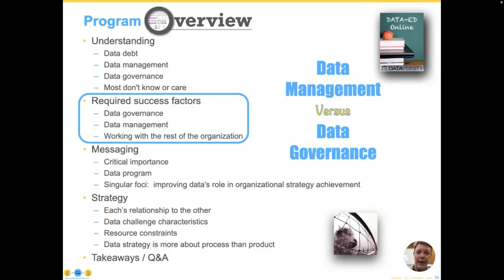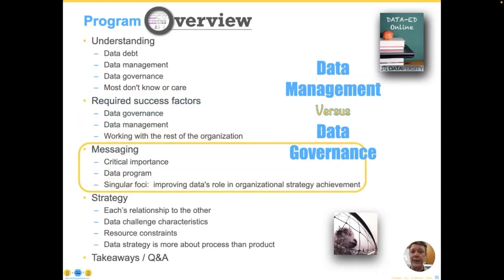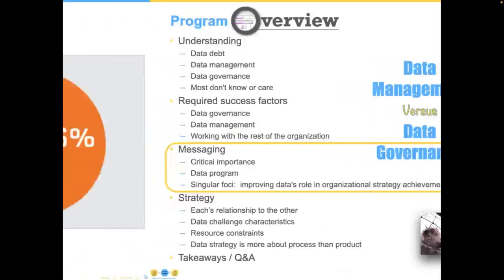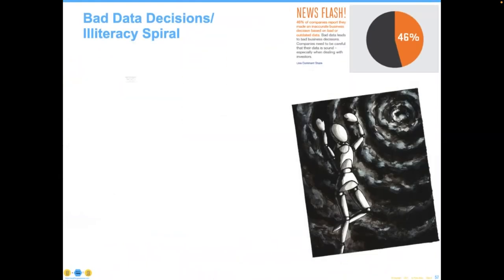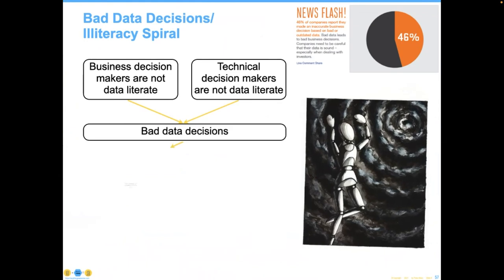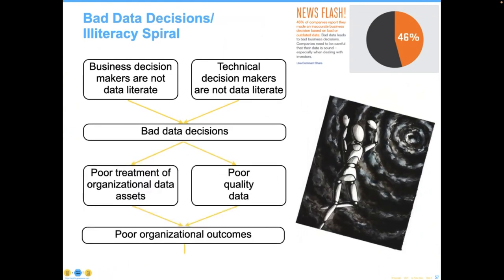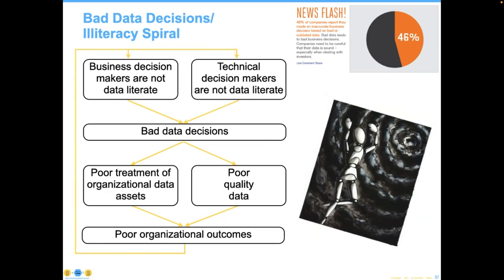Let's talk about messaging. It's no surprise that most organizations have had some bad data decisions — about half, according to recent surveys. This leads to what we call the bad data decisions or illiteracy spiral: because business decision makers aren't data literate, and neither are technical decision makers, they make bad data decisions. Those lead to poor treatment of organizational data assets and poor quality data, which leads to poor organizational outcomes. If you look at it squintily, it's the same thing as the shampoo bottle: lather, rinse, and repeat. What we want to do is break out of this cycle.